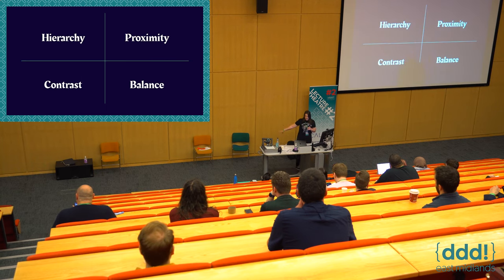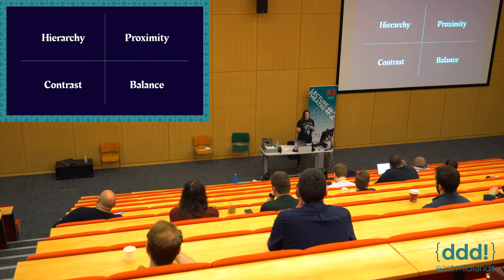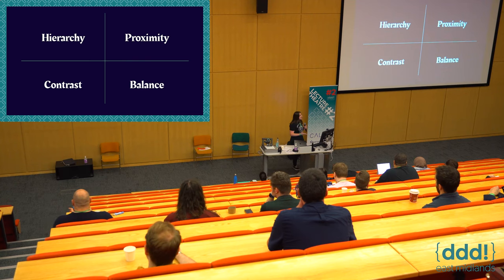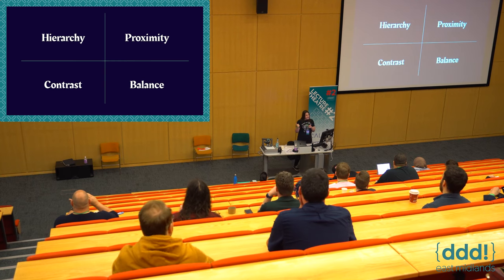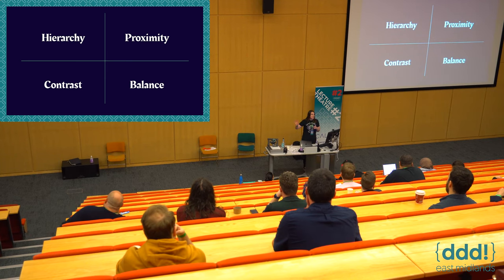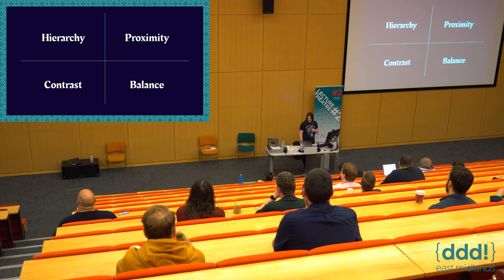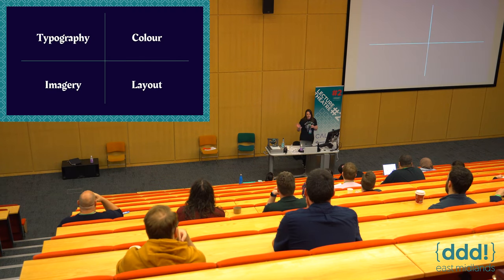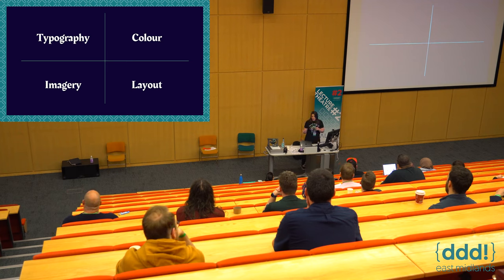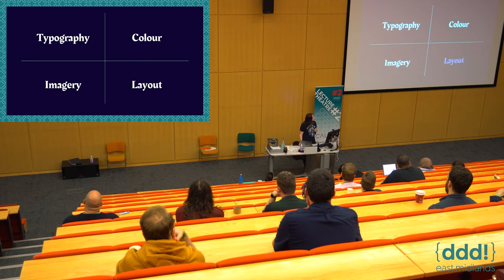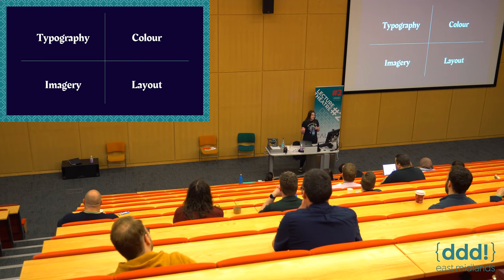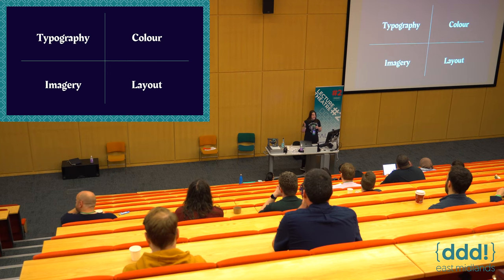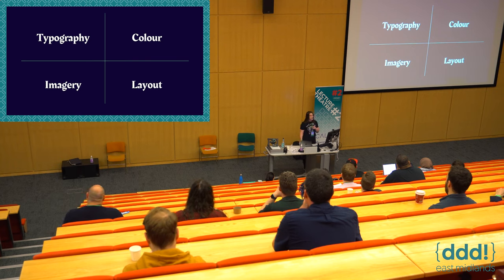So those are our four design principles — hierarchy, proximity, contrast, and balance. The idea is to always keep them in mind, in the back of our head, because they're the key to creating good design. If we're talking about design in terms of Lego, these are the instructions. Now I want to introduce some of the major building blocks — the pieces of Lego that build our design. I'm going to call them design elements. There are four key areas: typography, colour, imagery, and layout.